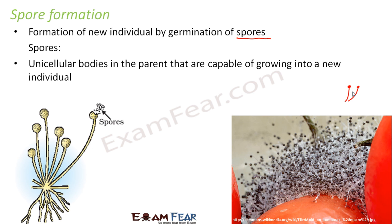Looking at the structure in more detail: these structures are known as sporangia, and inside the sporangia you have small unicellular bodies called spores. The spores stay inside the sporangia covering to protect themselves from unfavorable conditions. Whenever these spores come in contact with a moist surface — a watery surface containing water that is suitable for the formation of new organisms — the outer covering breaks, the spores come out, and they begin to grow.